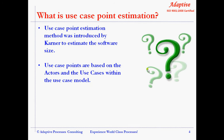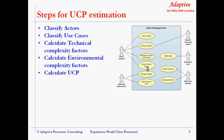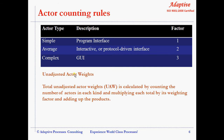Use case point estimation method was introduced by Karner to estimate software size. Use case points are estimated based on the actors and their use cases under the scope of the project. The following broad steps are followed: Step 1 - Classify Actors; Step 2 - Classify Use Cases; Step 3 - Calculate Technical Complexity Factors; Step 4 - Calculate Environmental Complexity Factors; Step 5 - Calculate UCP. We will discuss each step in subsequent sections.